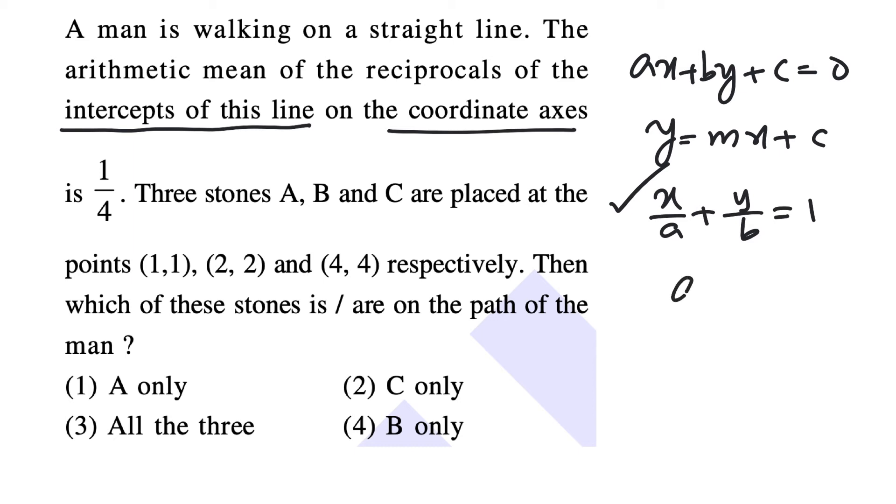Now the intercepts are A and B and it is given that the arithmetic mean of the reciprocals of the intercepts, so that is (1/A + 1/B) divided by 2, is given to be 1 by 4.